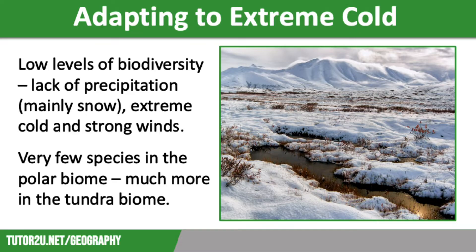So how do plants and animals adapt to the conditions in cold environments? Very few plants are found in polar regions. However, a wide variety of plant species are able to thrive in the tundra biome, because they have evolved specific adaptations that help them cope with a harsh environment. These conditions include low temperatures, strong winds, and low precipitation.